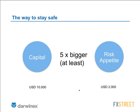The way to stay safe is to trade with capital that is at least five times bigger than the loss you're okay having the worst month every 20. For instance, if you're okay losing $2,000 the worst month every 20, you should have at least $10,000 in your account to be able to trade consistently for the long run.